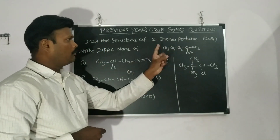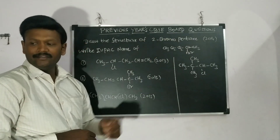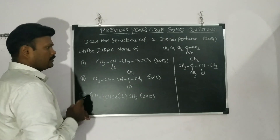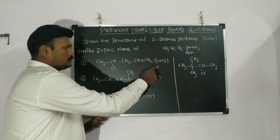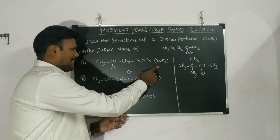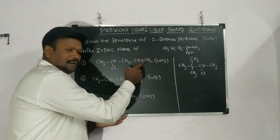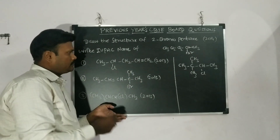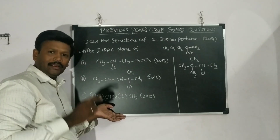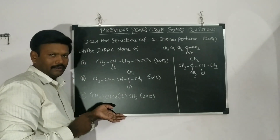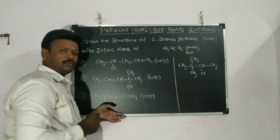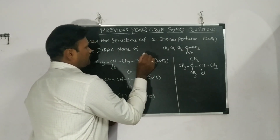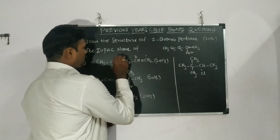The second question — how will you name this compound? In the year 2013 it was asked. A double bond enters into this compound. How will you name it? In haloalkenes, the preference is to be given to the double bond. So we have to number it from the end that gives the double bond the lowest number: one, two, three, four, five.